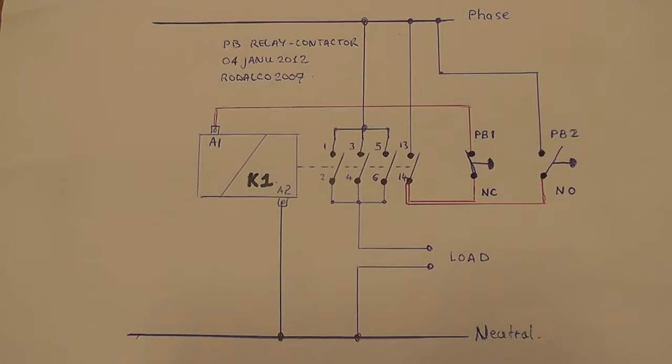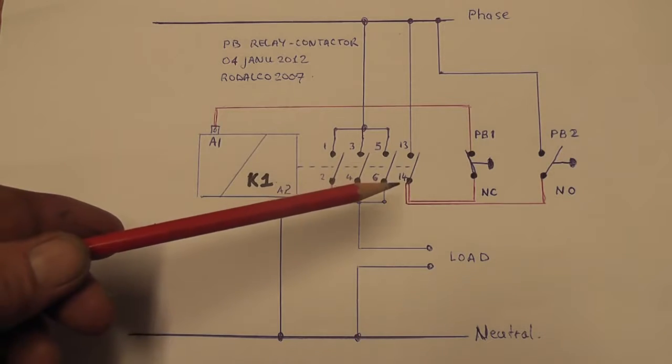Okay here's the schematic for the push button relay contactor. The phase on top, neutral. I've wired it up exactly the same as in the hard wired thing. That's the relay. It's a four pole. One, two, three and four.